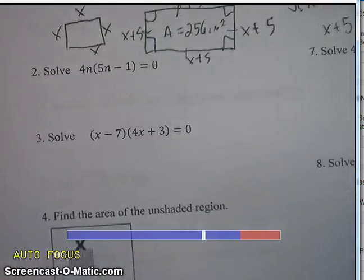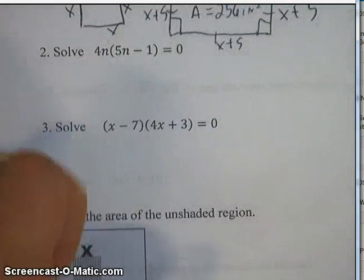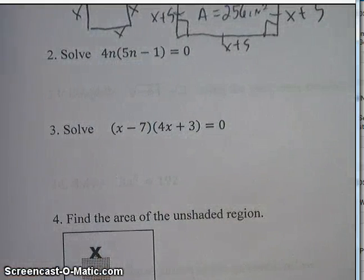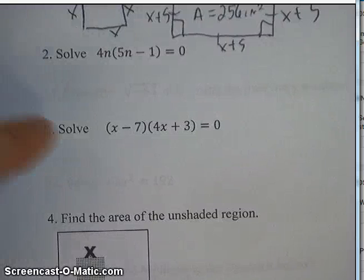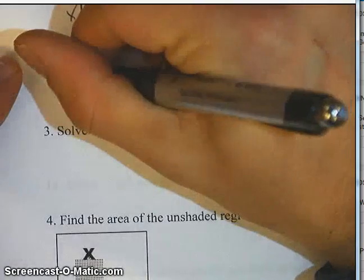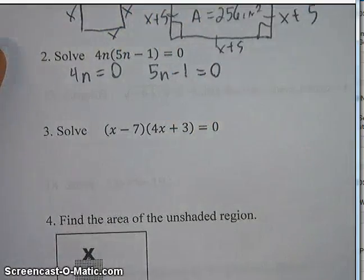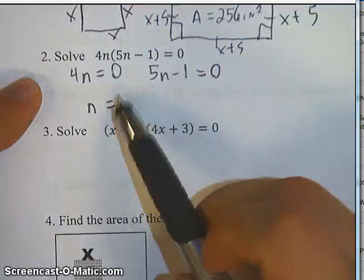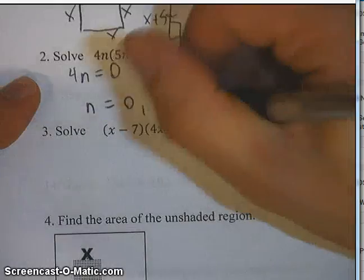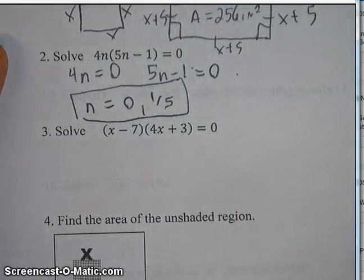Number 2: solve 4n times (5n minus 1) equals 0. This is a quadratic that's already been factored, and when you're already in factored form, all the hard work is done for you. Just take each individual factor and set it equal to 0. Setting 4n equal to 0 gives n equals 0. Setting 5n minus 1 equal to 0, add 1 and divide by 5 to get 1 fifth. This has two solutions: 0 and 1 over 5.